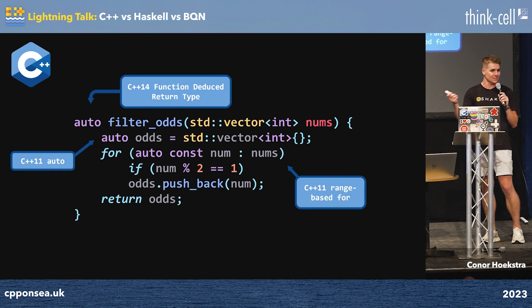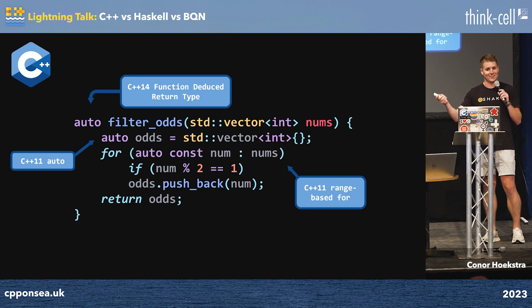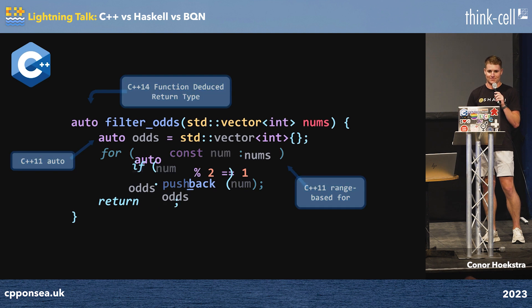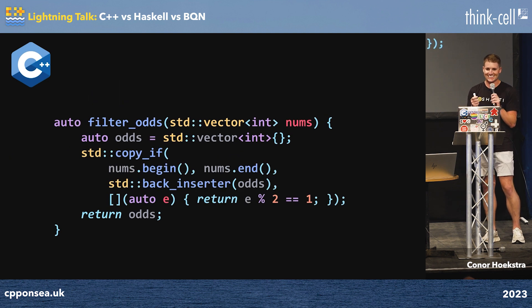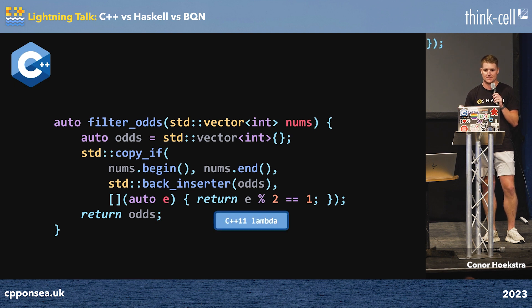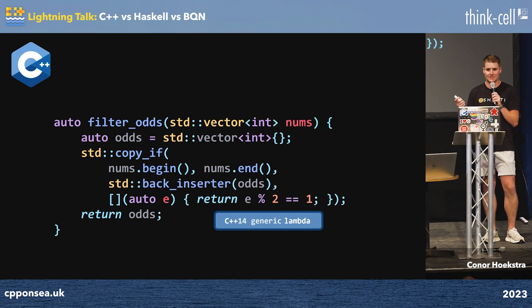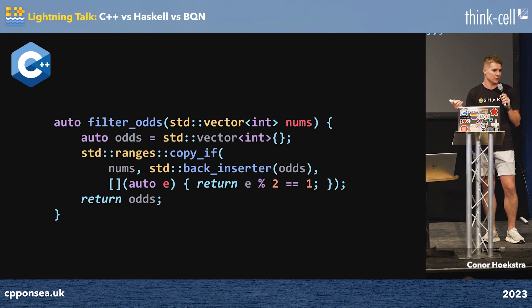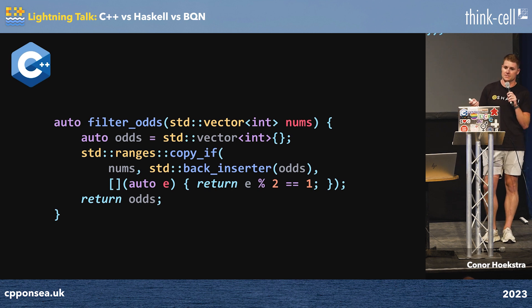But you should all be thinking: what algorithm should we be using? Copy if. Do your homework, folks. Copy if — we're basically just making use of a lambda that checks if it's odd. This is a C++14 generic lambda, not just C++11. And we can do a little bit better here, because in C++20 we got the range overload, so we no longer need to specify the iterators. This is fantastic.